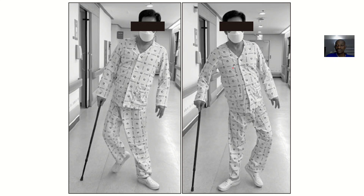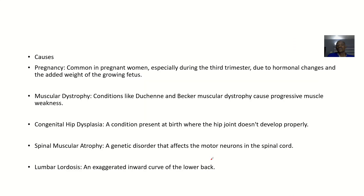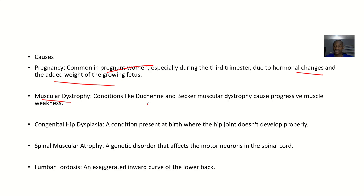Causes include pregnancy, which is common especially during the third trimester due to hormonal changes and the added weight of the growing fetus. Muscular dystrophy — conditions like Duchenne and Becker muscular dystrophy — can cause progressive muscle weakness.